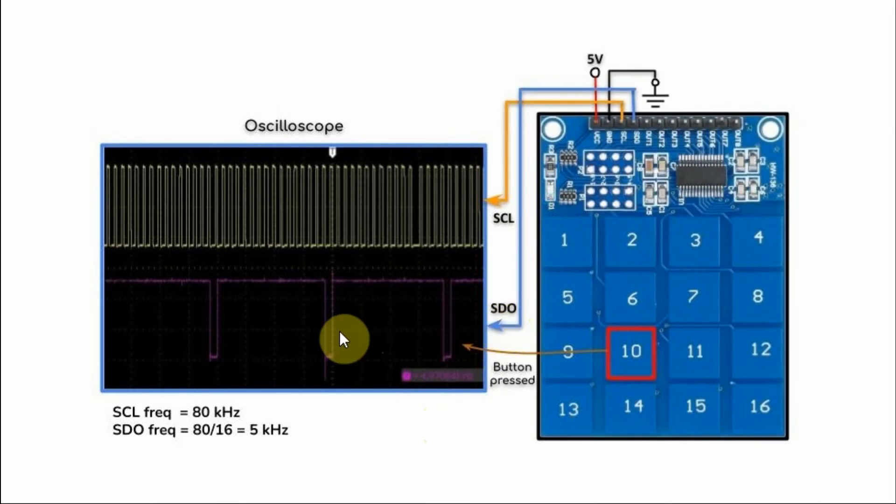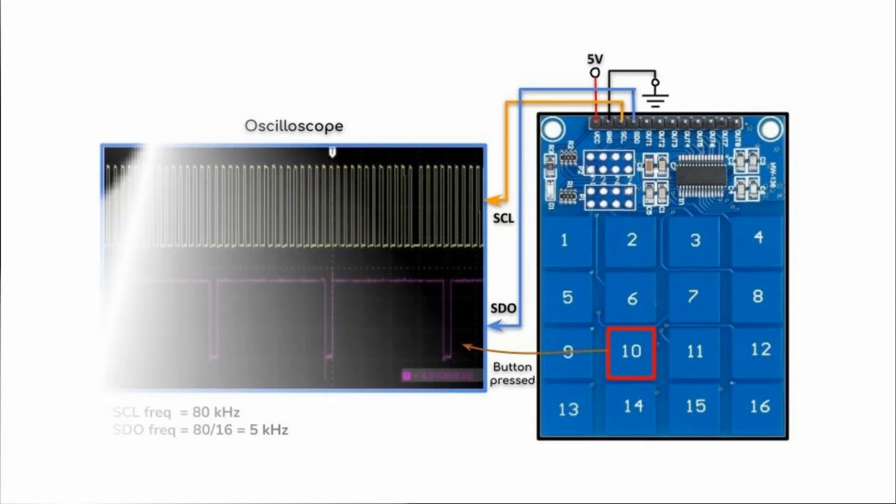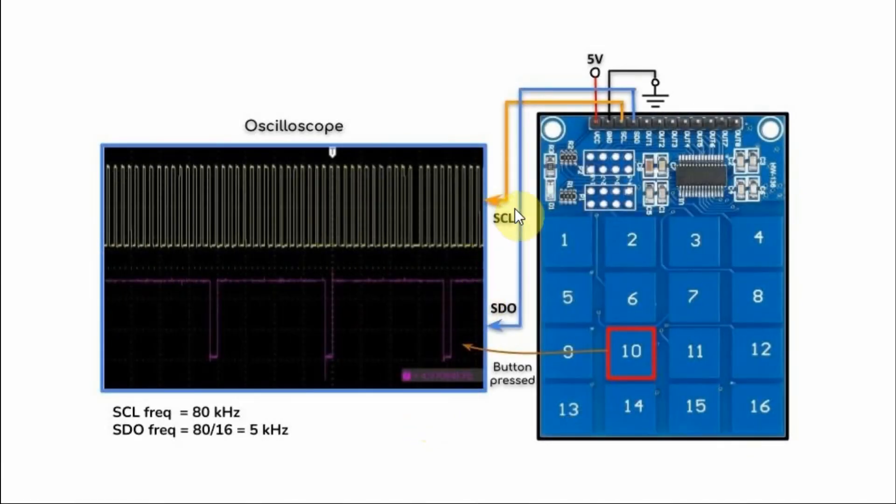Next, we check the SDO line for any key press. So when we have a logic 0, we know that a key has been pressed, and we know which key from its corresponding clock pulse. Next, we send over the serial clock line logic 1 so that we are ready to scan the next subsequent key press.